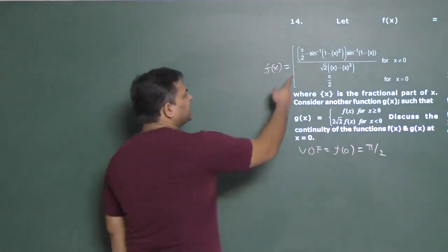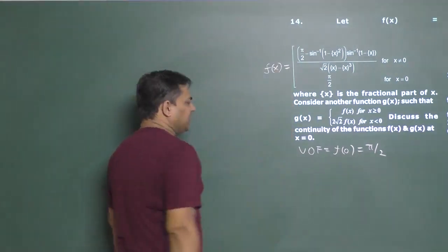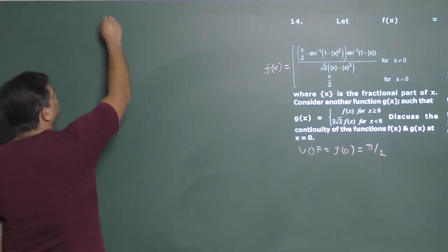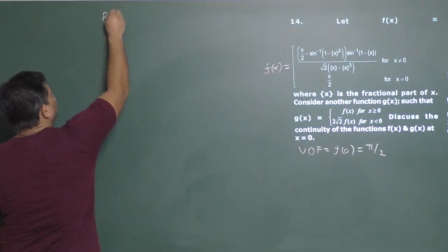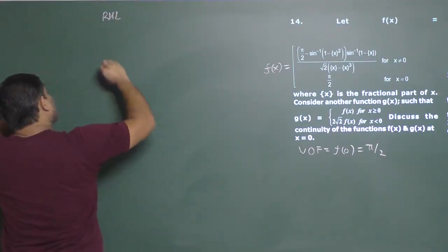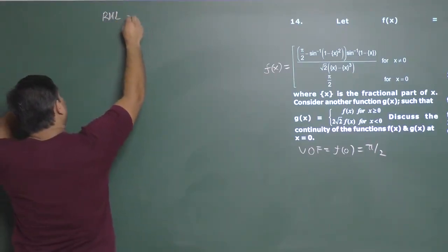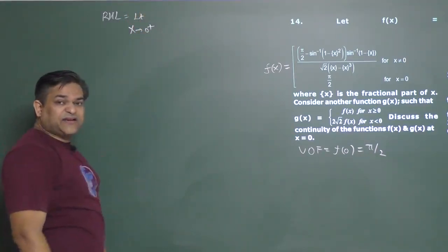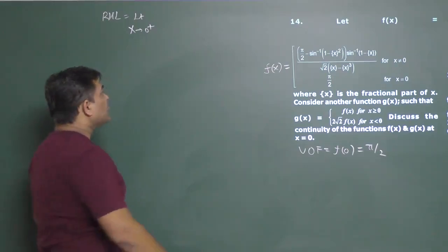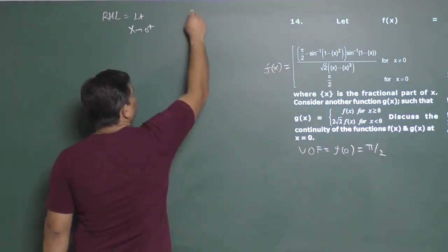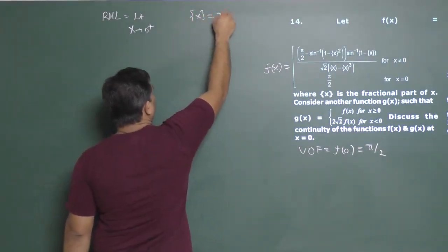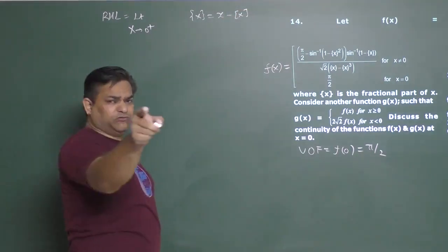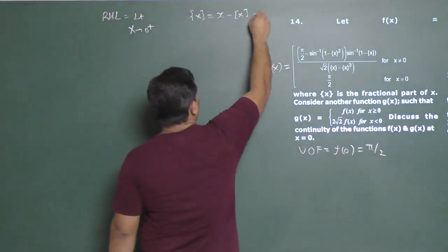Let's evaluate left-hand limit and right-hand limit. We have to evaluate both. Let's start with the right-hand limit. As x approaches 0 plus, since x is greater than 0, the fraction part of x becomes x minus the greatest integer of x.